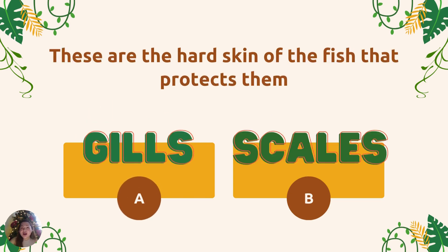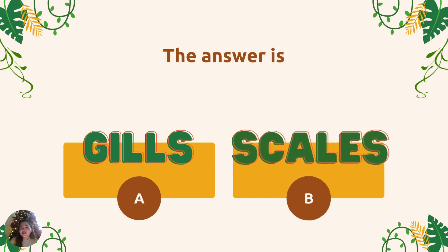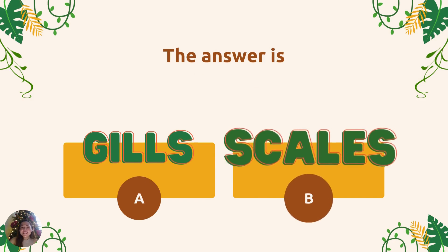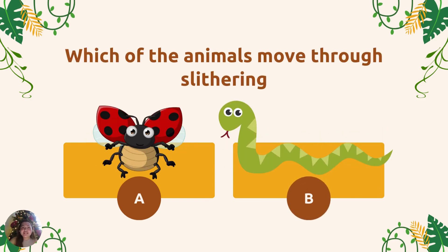These are the hard skin of the fish that protect them. Letter A, gills. Or Letter B, scales. And the answer is correct — scales.